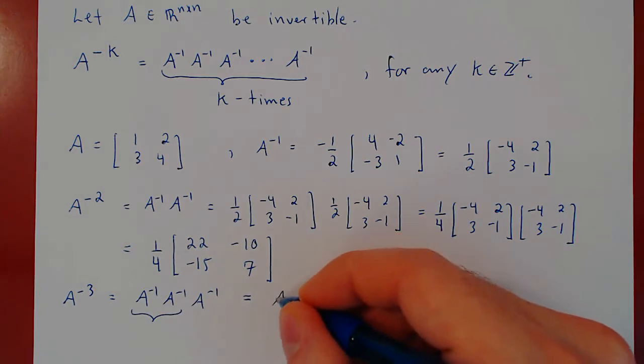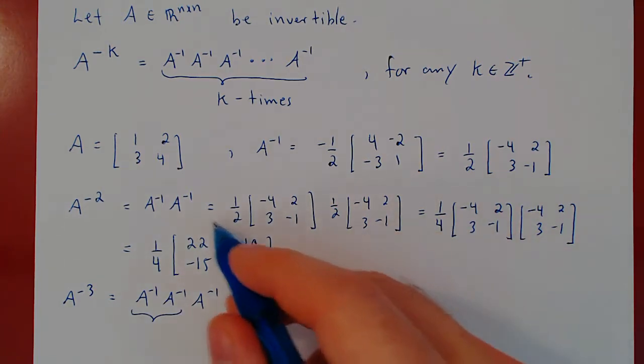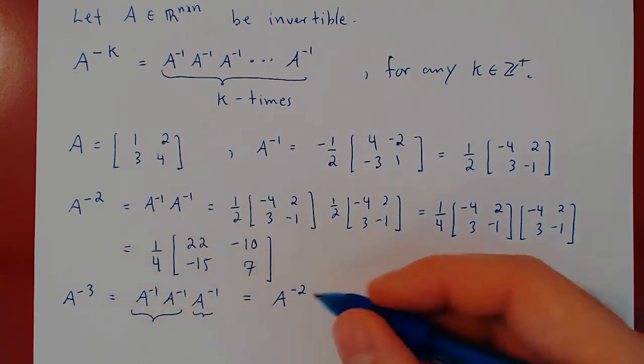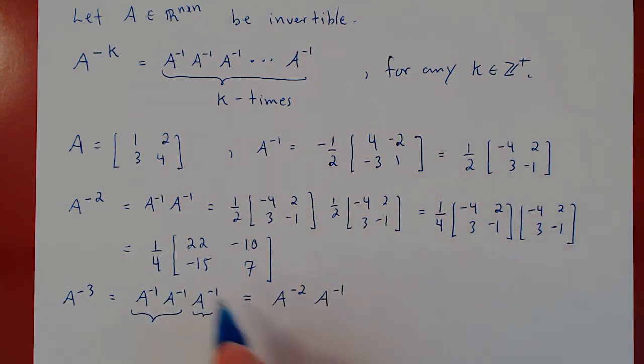A to the negative 2, which we have just found, times A inverse. So, if you perform A to the negative 2, which is this matrix, times A inverse, which is this matrix, you will get A to the negative 3.